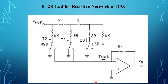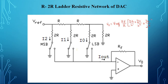The operational amplifier converts the current to a voltage signal V_out, which can be calculated from the equation: V_out = V_reference × (Rx/R) × (D2/2^1 + D1/2^2 + D0/2^3).